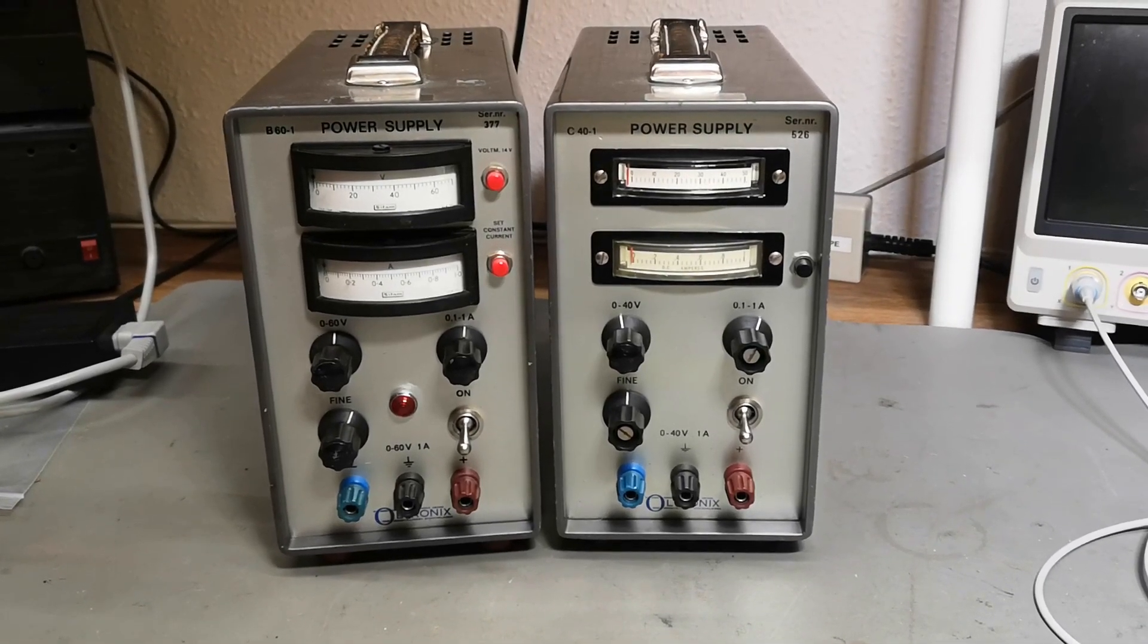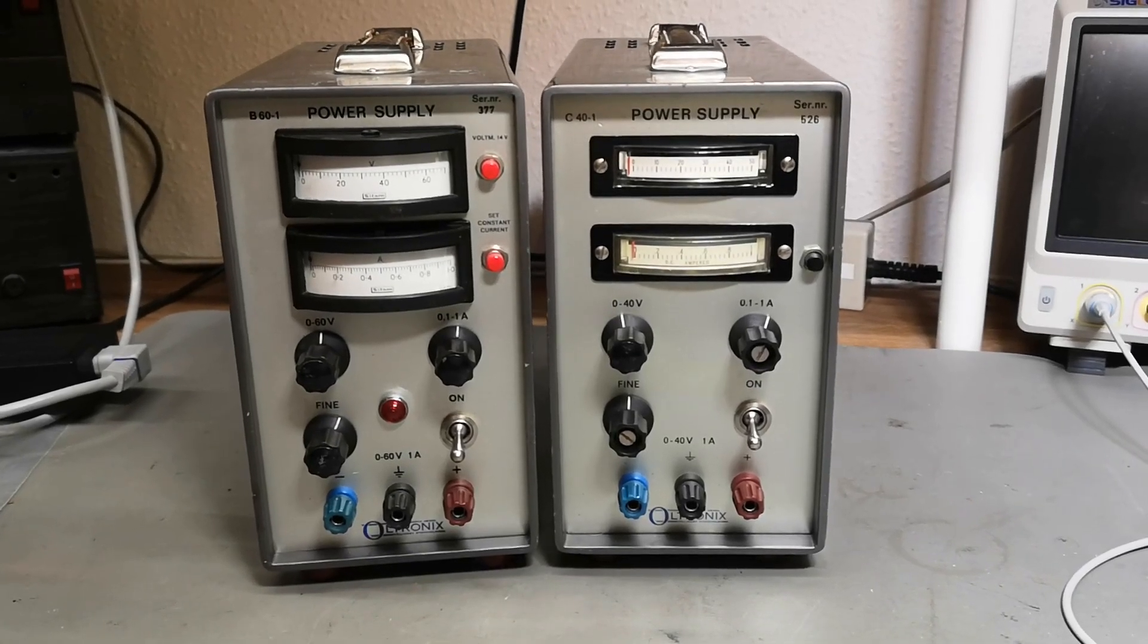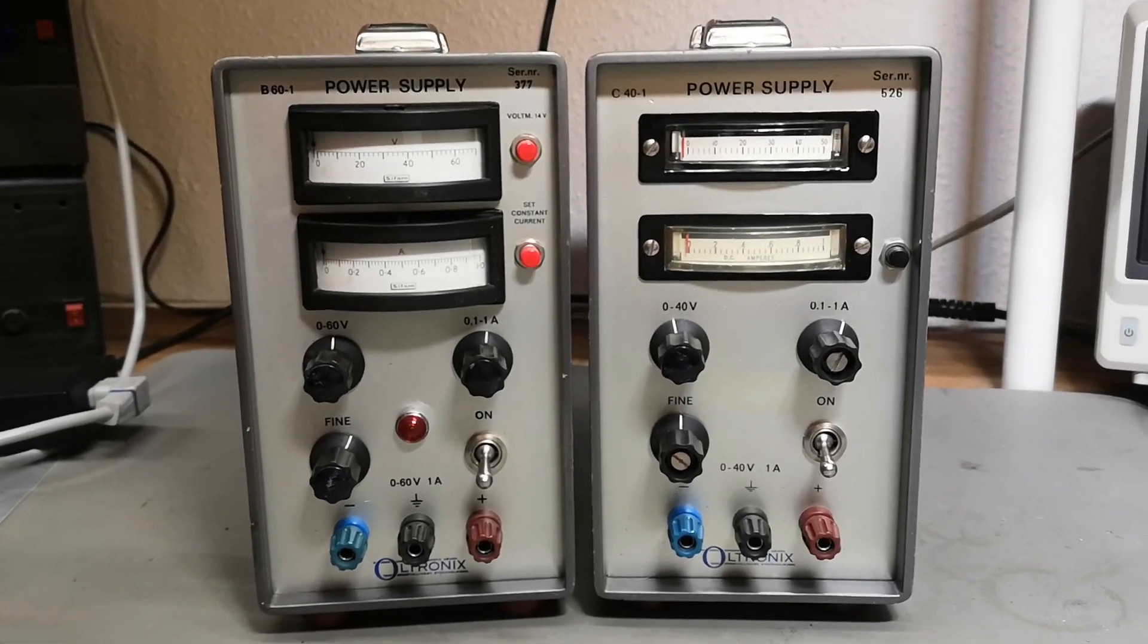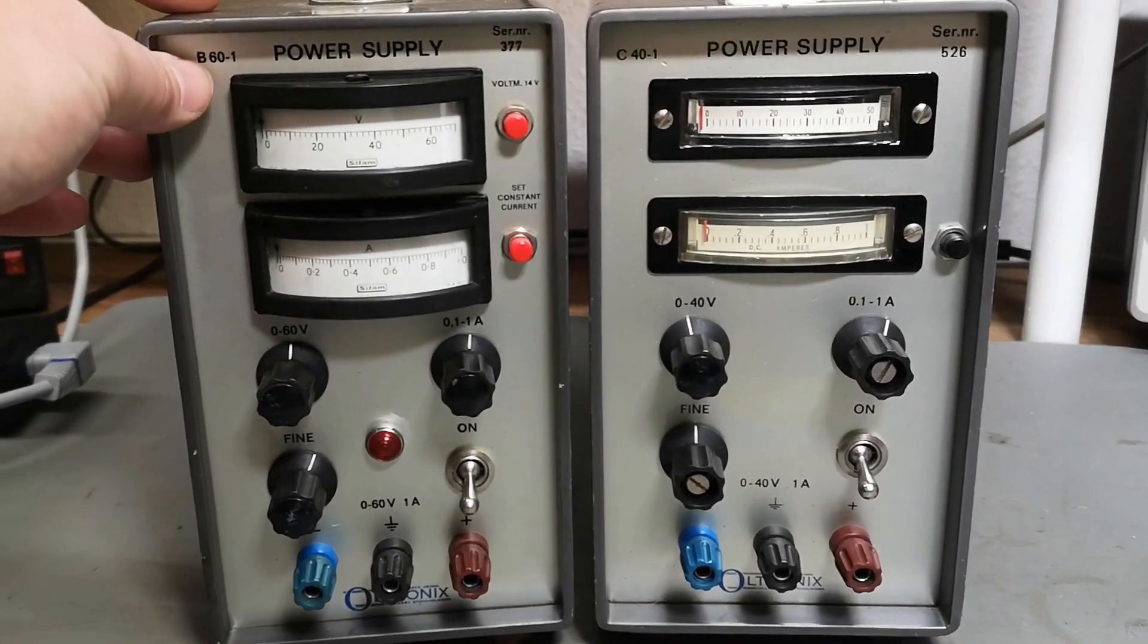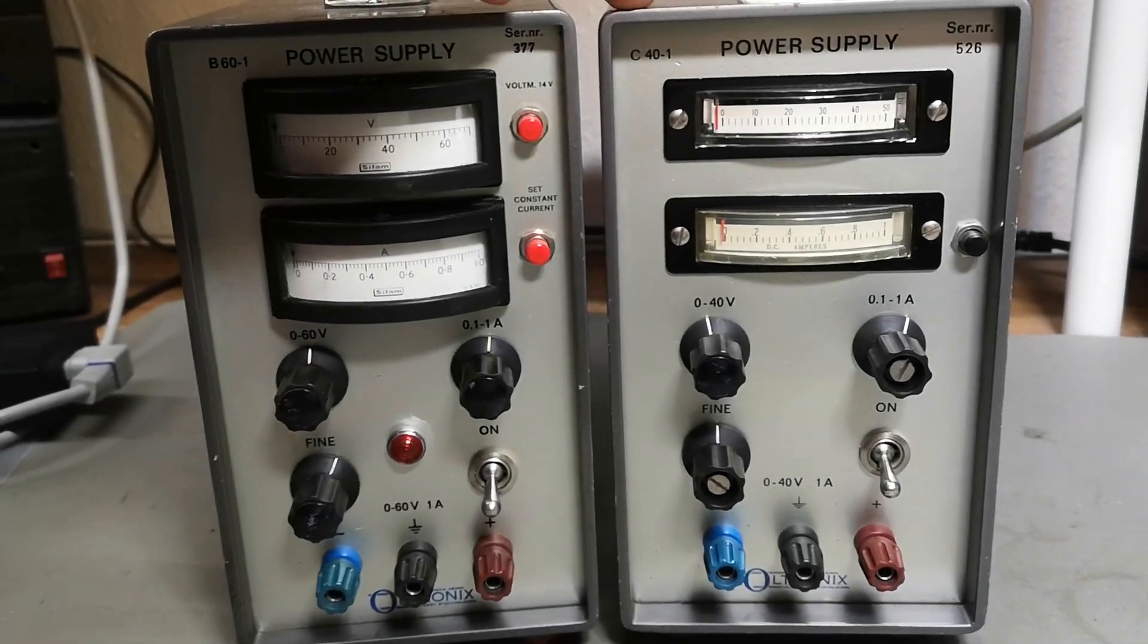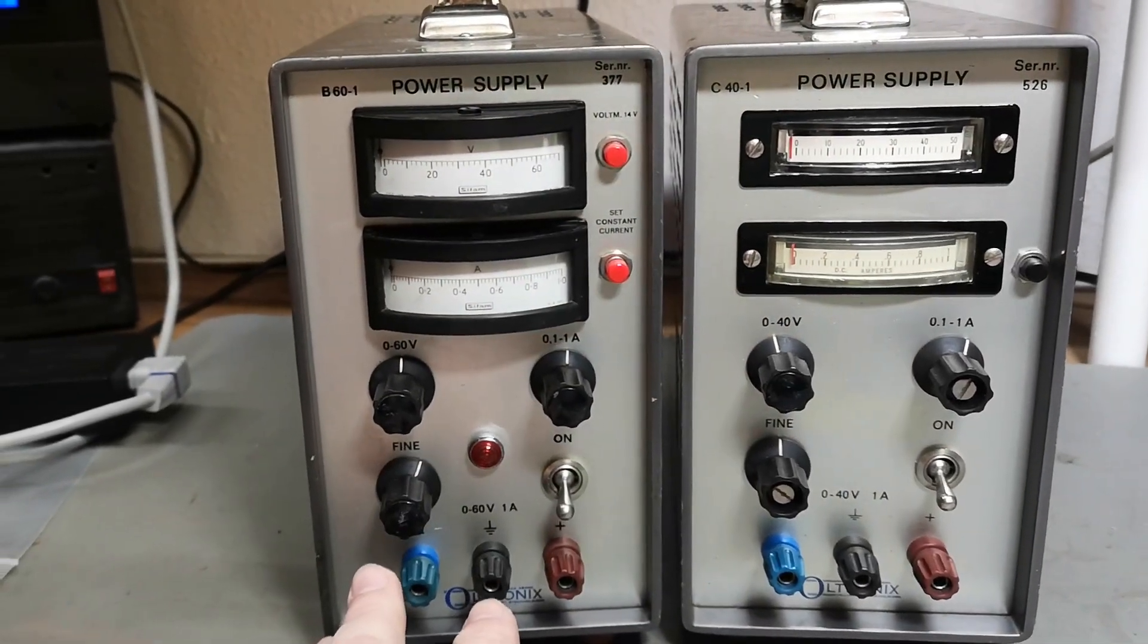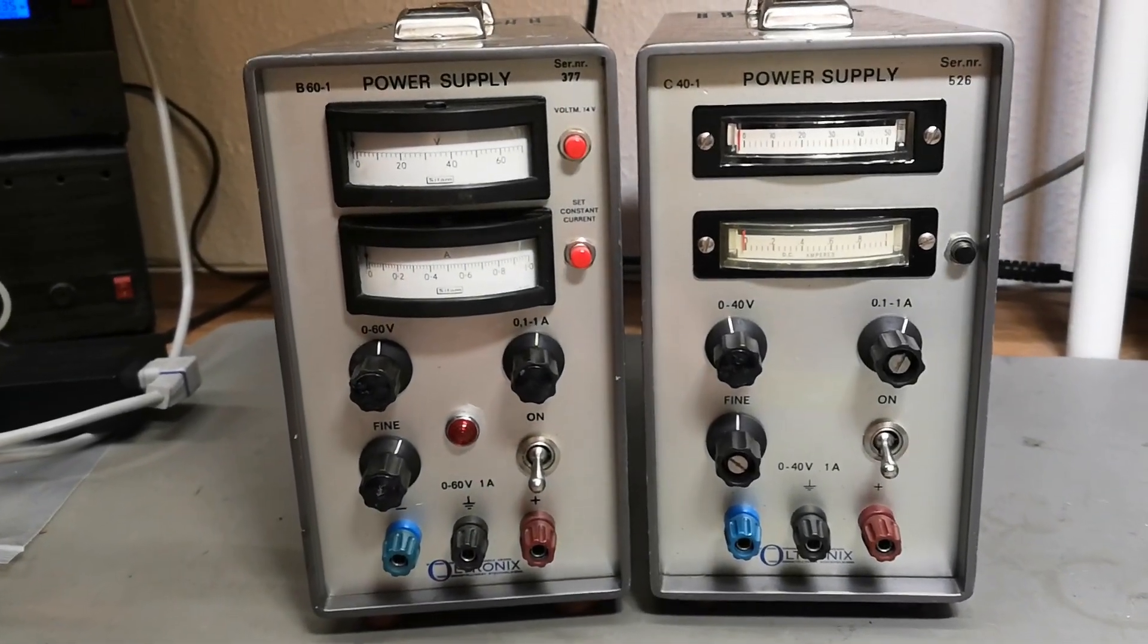Welcome to a new test and teardown video. This time it's a power supply from Swedish Ultronics. It's actually two different models but they're very much alike. One is called the B60-1 and the other one is C40-1, so it's 40 volts 1 amp and 60 volts 1 amp.